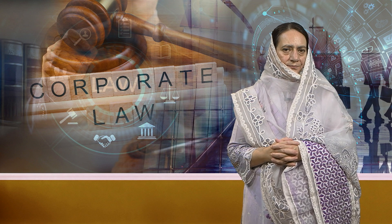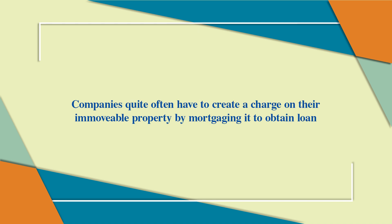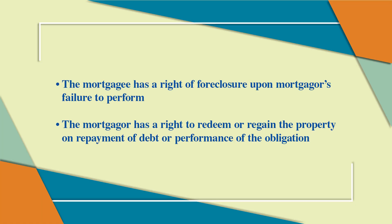To secure repayment of a loan, the creditor may require the debtor company to mortgage its immovable property. The relationship between the mortgagor (the company) and the mortgagee is that of debtor and creditor. There are three outstanding characteristics of a mortgage: first, the interest in the mortgaged property terminates upon performance of the obligation secured; second, the mortgagee has a right of foreclosure upon the mortgagor's failure to perform; and third, the mortgagor has a right to redeem or regain the property on repayment of the debt.